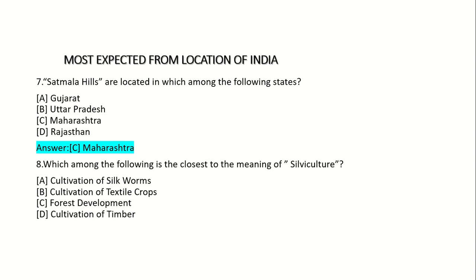Eighth question: Which among the following is closest to the meaning of sylviculture? Option A: Cultivation of silkworms. Option B: Cultivation of textile crops. Option C: Forest development. Option D: Cultivation of timber. Answer: Option C — Forest development.